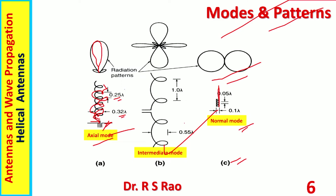Several other intermediate modes are also possible but they don't have much practical importance. For academic interest, an intermediate mode is shown here where feeding is from sideways at the center of the coil, and radiation consists of four lobes: end-fire, backfire, and broadside.